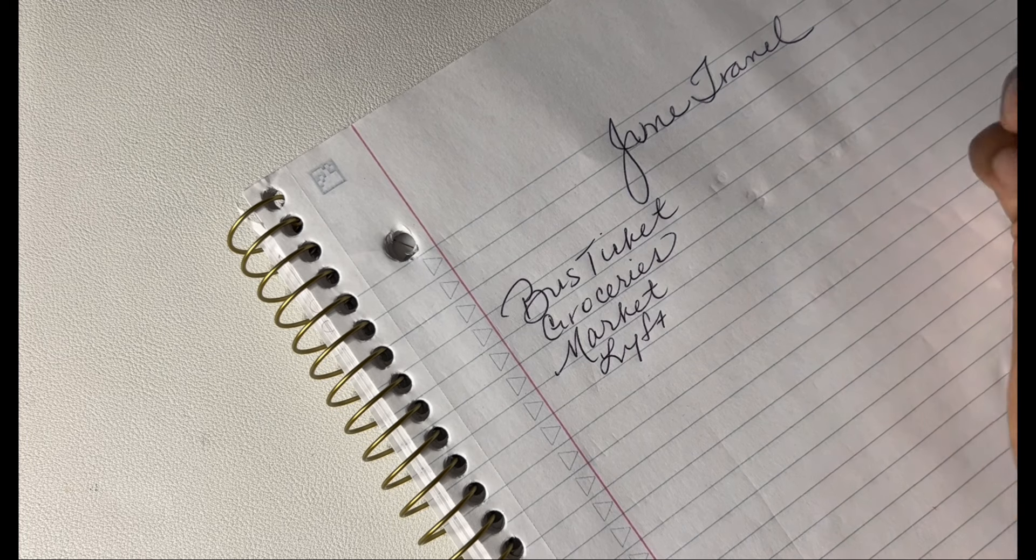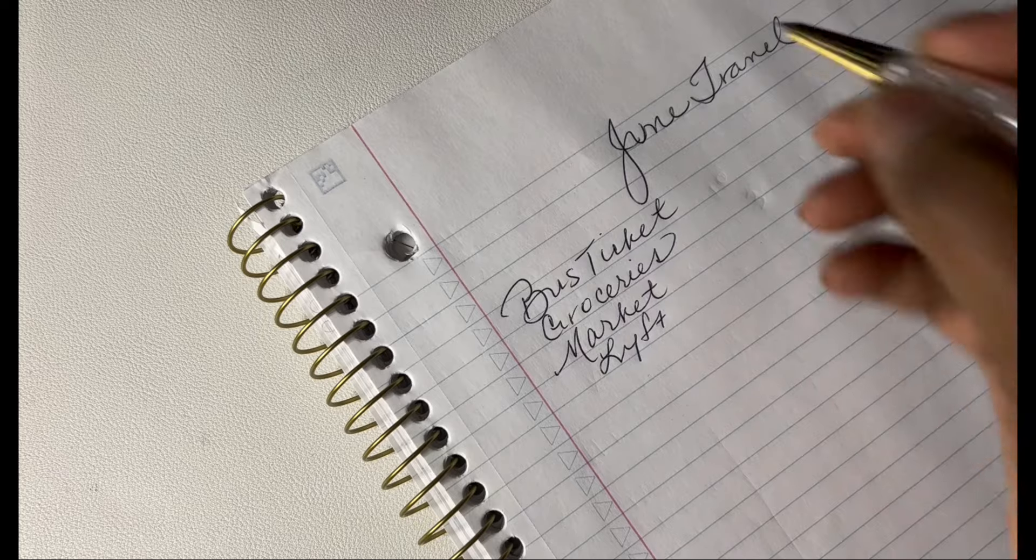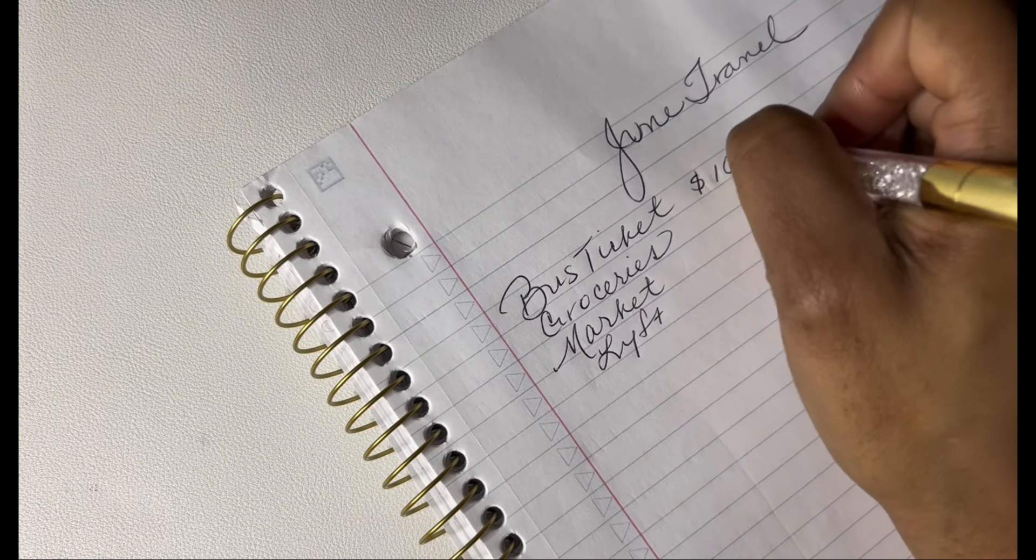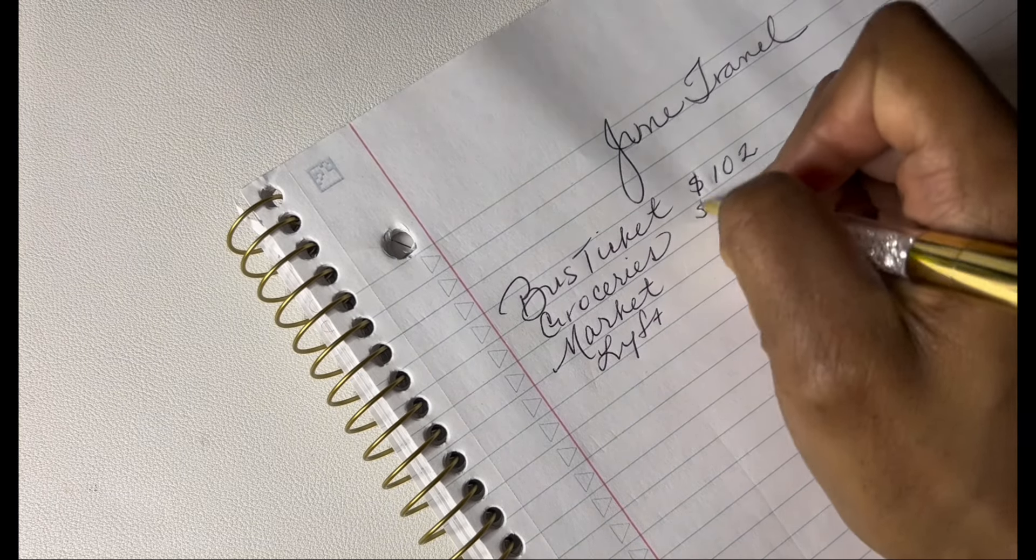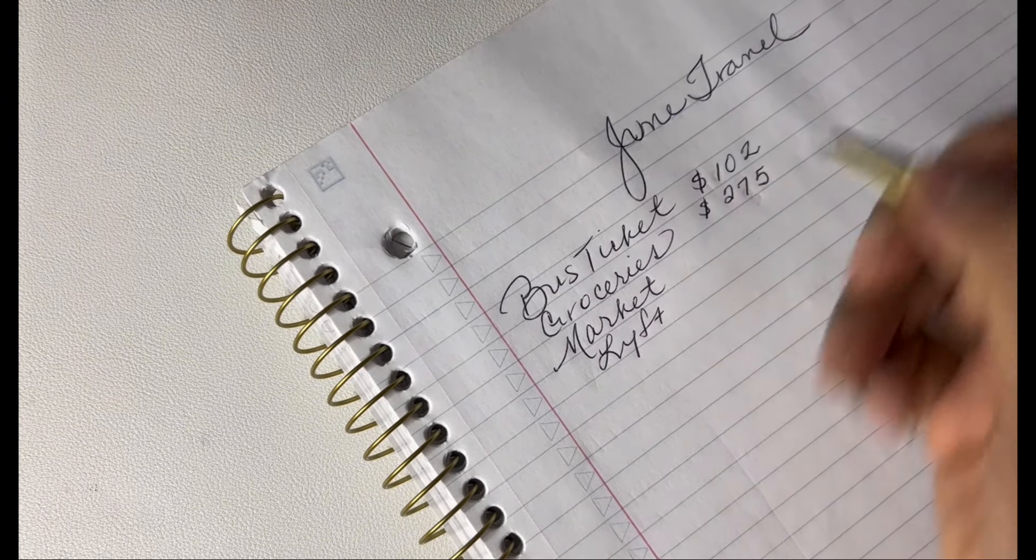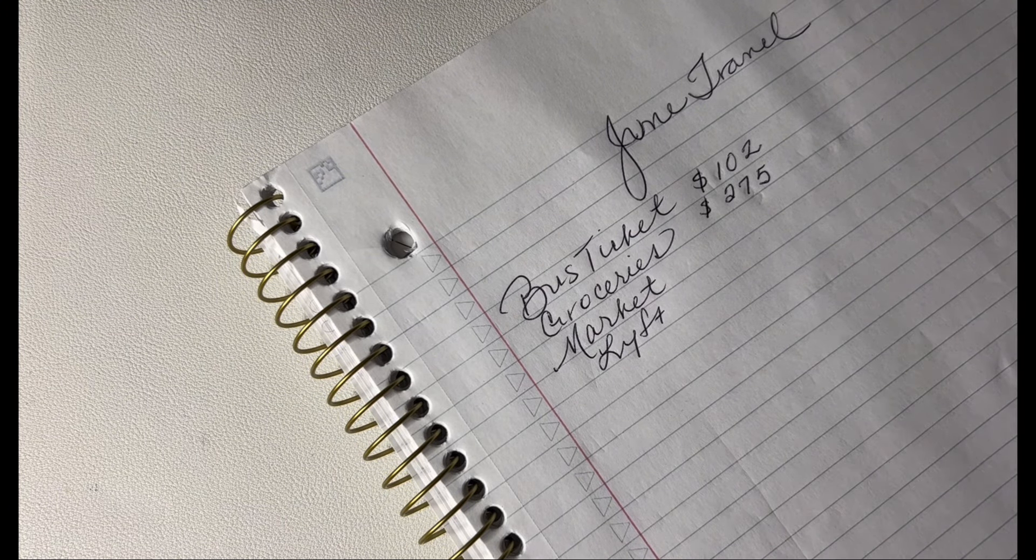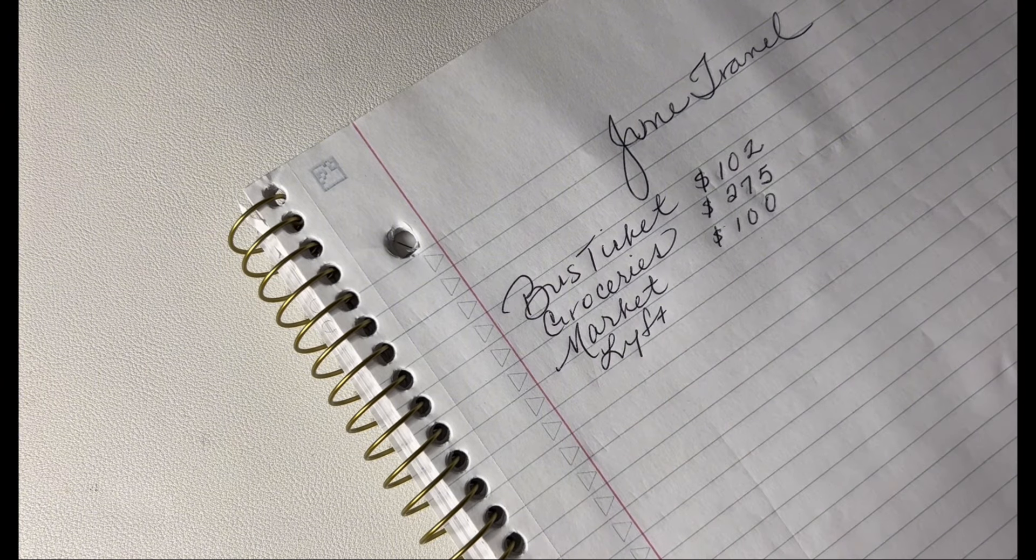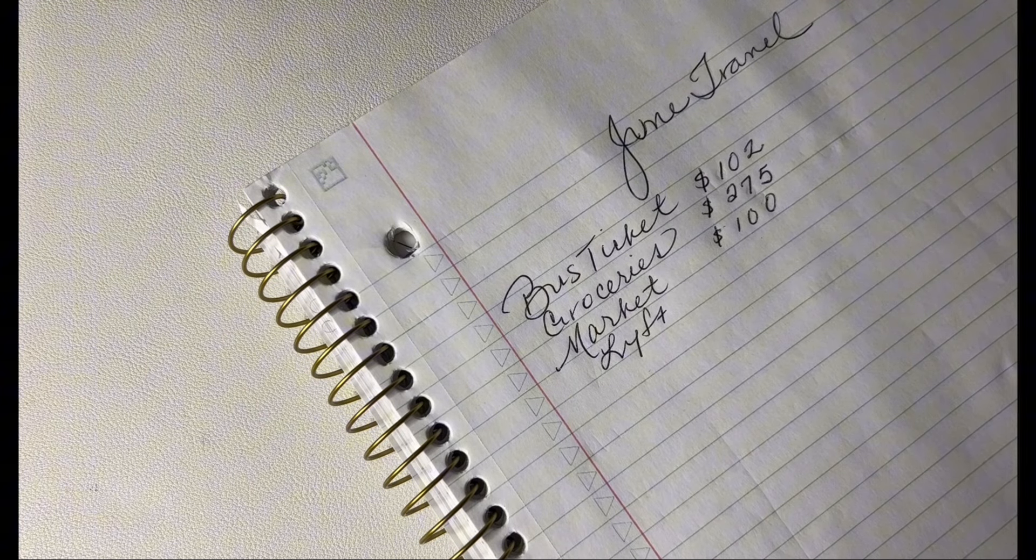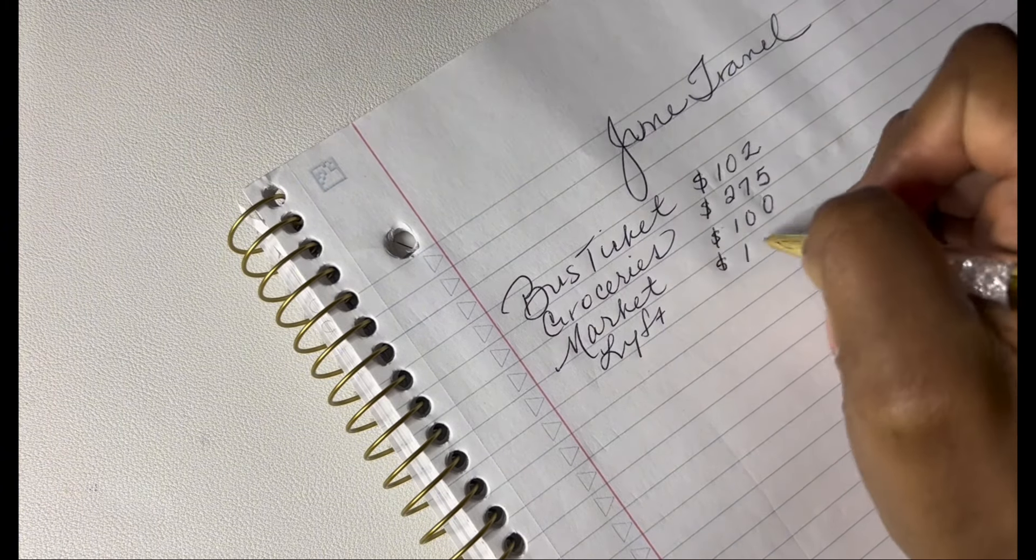So I'll be traveling by bus and the round trip ticket for that is $102. We're staying at an Airbnb, so I'm gonna get some groceries and I've allotted $275 for that. I'll also be getting some items from the local market there and I've allotted $100 for that. And for Lifts - I use Lyft, I don't use Uber - I've allotted $100 for that as well.